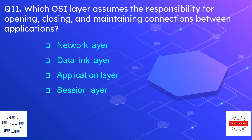Question number eleven is: which OSI layer assumes the responsibility of opening, closing, and maintaining connections between applications? The options are network layer, data link layer, application layer, and session layer. The correct answer is session layer — if you want to remember this, you can replace the word 'connection' with 'session.' The session layer is responsible for opening, closing, and maintaining connections or sessions.